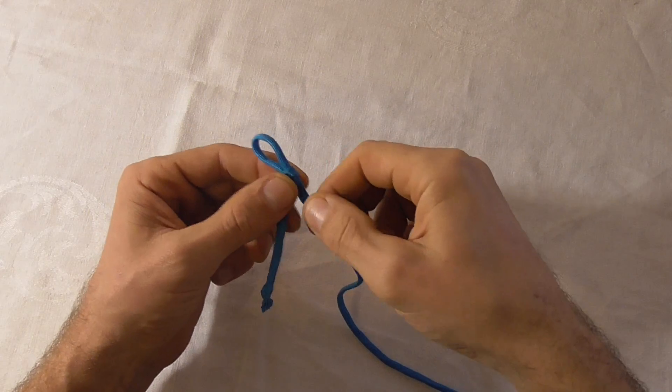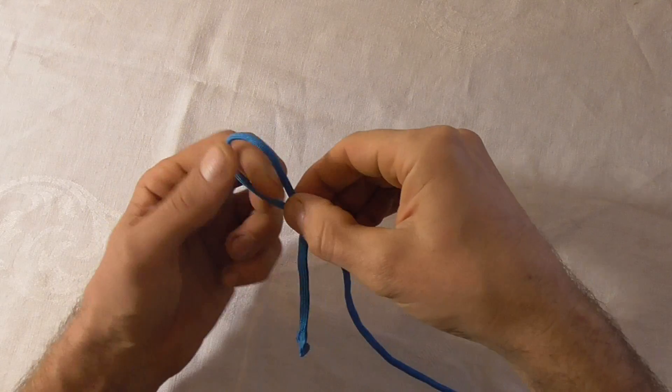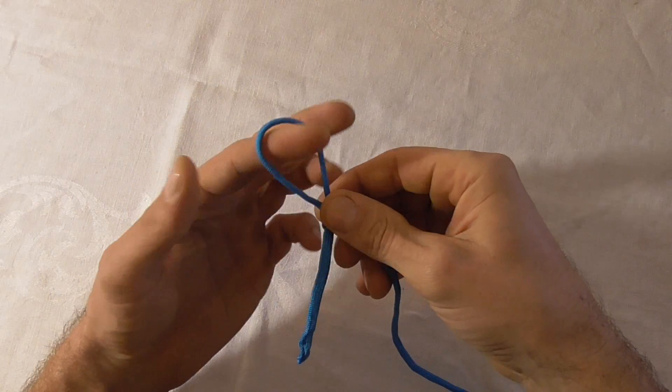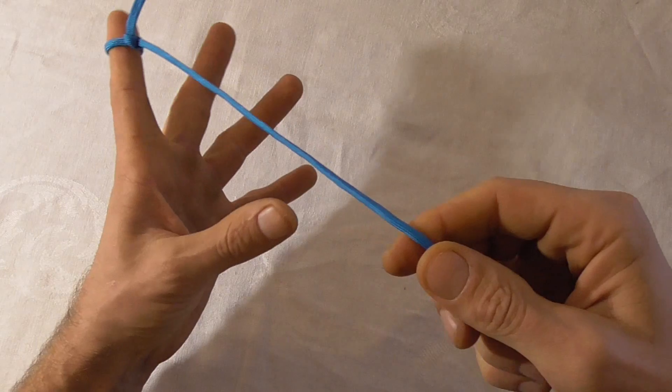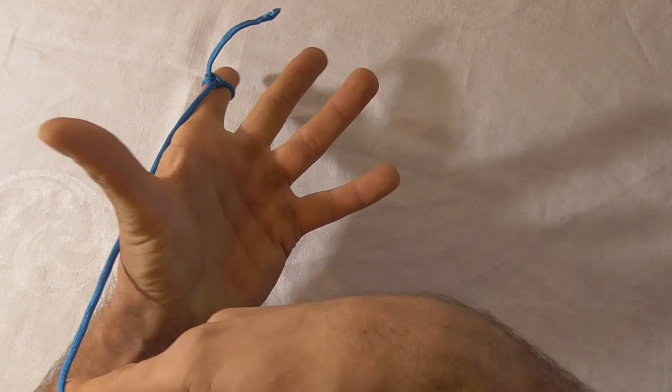I like to use a simple noose just because it comes undone so easily. And then what I'm going to do is just put that over my index finger, and then I'm going to make wraps around my thumb and my little finger.